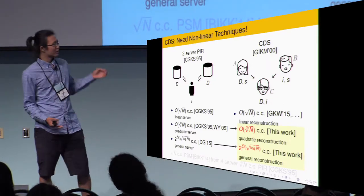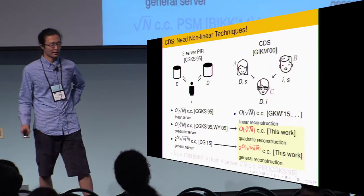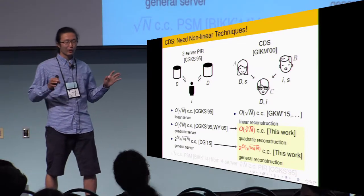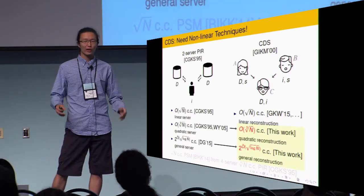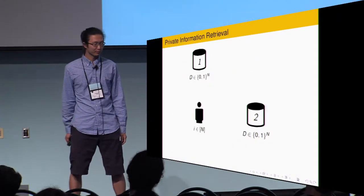Encouraged by previous result, we also import more techniques from here. We construct CDS, these two with cube root n communication complexity and subpolynomial communication complexity. Actually, we have a quite general transformation from two-server PIR to CDS. As long as the PIR satisfies some mild properties.